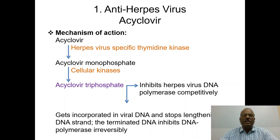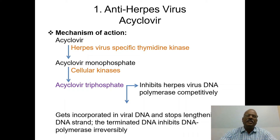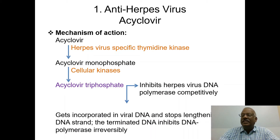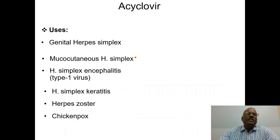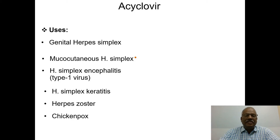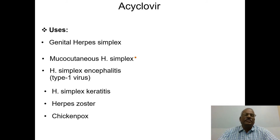Acyclovir triphosphate competitively inhibits herpes virus DNA polymerase. Since herpes is a DNA-containing virus, acyclovir inhibits the viral DNA polymerase and the lengthening of the DNA strand is inhibited. Acyclovir is used for genital herpes simplex, cutaneous herpes simplex, herpes simplex encephalitis, herpes simplex keratitis, herpes zoster virus infections, and chickenpox infections.